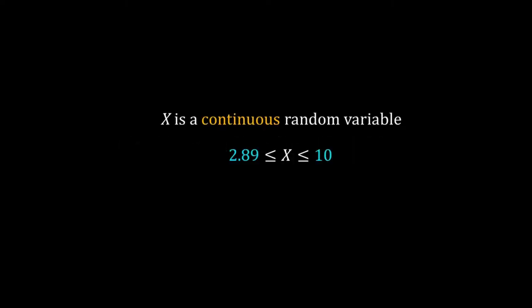Here is a simple problem: X is a continuous random variable in the interval 2.89 to 10. What is the probability that X is equal to 3.568? Try it.